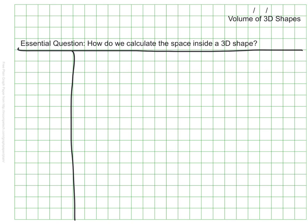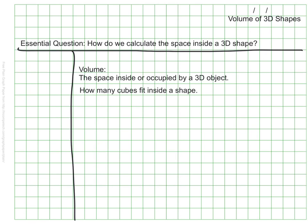As many of us know, volume is the space a 3D shape occupies. Another way to think about volume is that it is how many cubes could fit inside an object. It's this cubic measurement that has us use the notation 'cubed' when dealing with volume. So we might see inches cubed or feet cubed — cubic feet, cubic inches, and so on — rather than the squared notation we use for area.